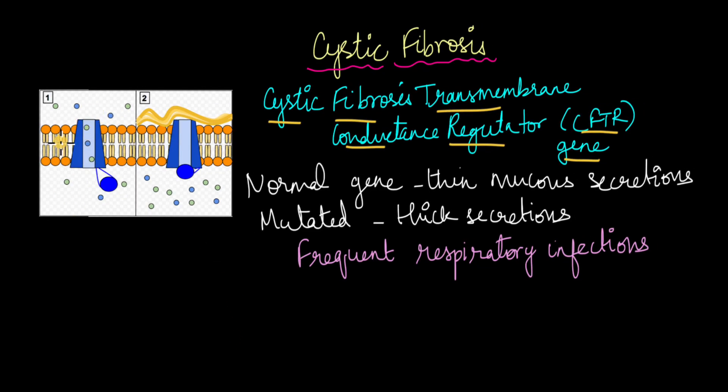Now under normal conditions when there is no mutation in the CFTR gene, this protein channel functions properly. Because of the functioning of this protein channel, the mucus secretions, especially in the lungs, they are normal. They are produced in their normal thin consistency. But in the case of a mutated CFTR gene, this protein channel is blocked.